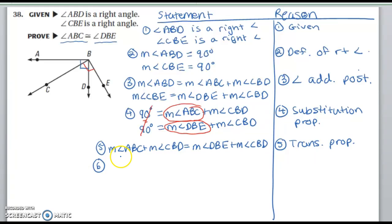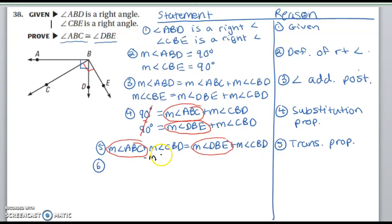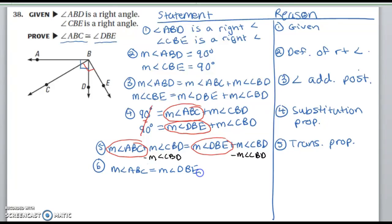Now we're almost there. We have the two things we want — angle ABC and angle DBE. Notice that the measure of angle CBD appears on both sides. So now I'm going to subtract the measure of angle CBD from both sides. They wind up subtracting out, so I'm left with: the measure of angle ABC equals the measure of angle DBE. That was the subtraction property.